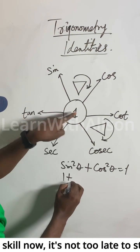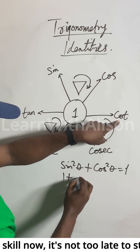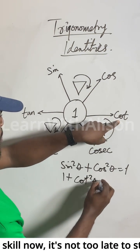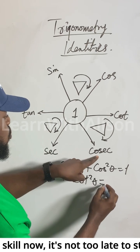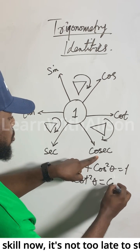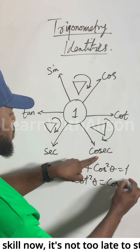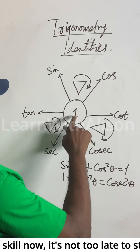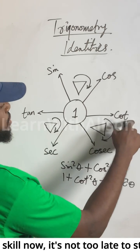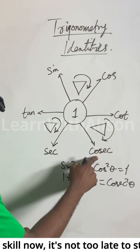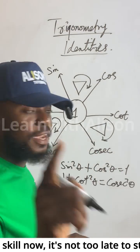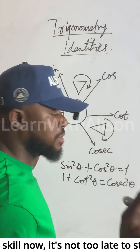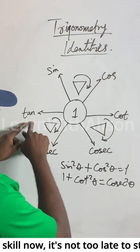Now this one: 1 + cot²θ = cosec²θ. Look at it — look at the arrow — this plus this will give us this. Then the final one I will give you that will help you pass the exams is this: